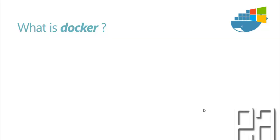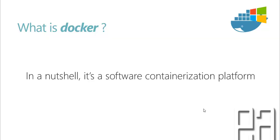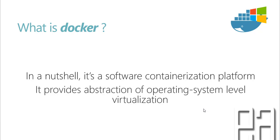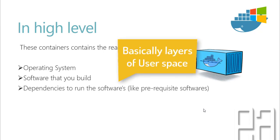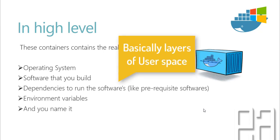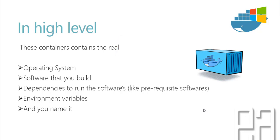So what is Docker? In a nutshell, it's a software containerization platform and it provides abstractions of operating system level virtualizations. At a high level, these containers contain a real operating system, software that you build, dependencies to run software, environment variables, and you name it — it can contain anything. So these are what containers are, and containers are a lot more than this for Docker for Windows, which we'll be talking about in this series.